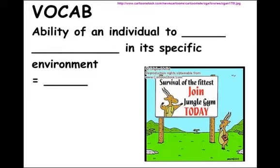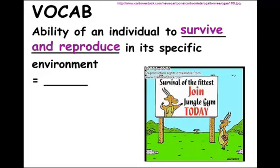When we talk about fitness in everyday language, we think of going to the gym, working out, being in shape. But when talking about evolution and Darwin's idea of change in populations, he used the word fitness differently. Fitness is the ability of an individual organism to survive and reproduce in its place. It may not be the strongest or the one with the biggest muscles — sometimes being small helps you survive. You can hide, camouflage, or use horns to defend yourself.